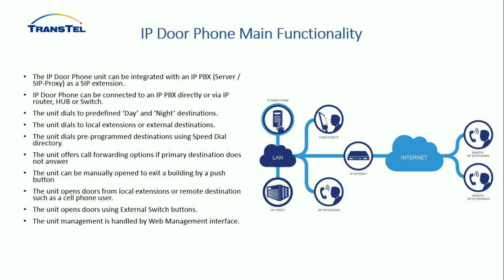The unit supports call forwarding if the primary destination does not answer. The unit can manually open an exit by pressing an external button. The unit can open a door from local extensions or remote destinations such as a cell phone. For example, if the maintenance engineer is not at their desk and a visitor calls, it can forward to their cell phone. If they're expecting a contractor — say, an air conditioning technician — they can answer on their cell phone and open the door remotely.